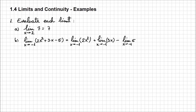For the first limit, we notice we have 2 times x squared. We can use the constant multiple property, because this is a constant multiplied by x squared. We have a constant multiple and a power, so we can take the constant and factor it in front of the limit. And since the limit of a power is the power of the limit, this becomes 2 times the limit when x approaches minus 1 of x, squared.